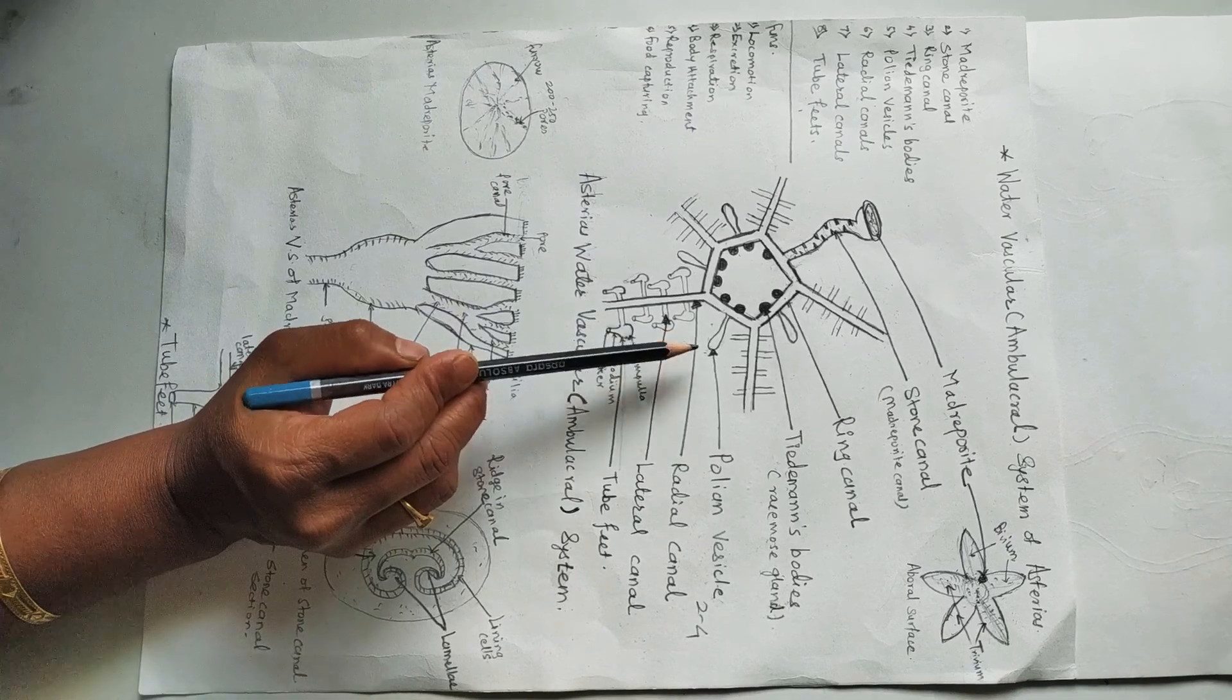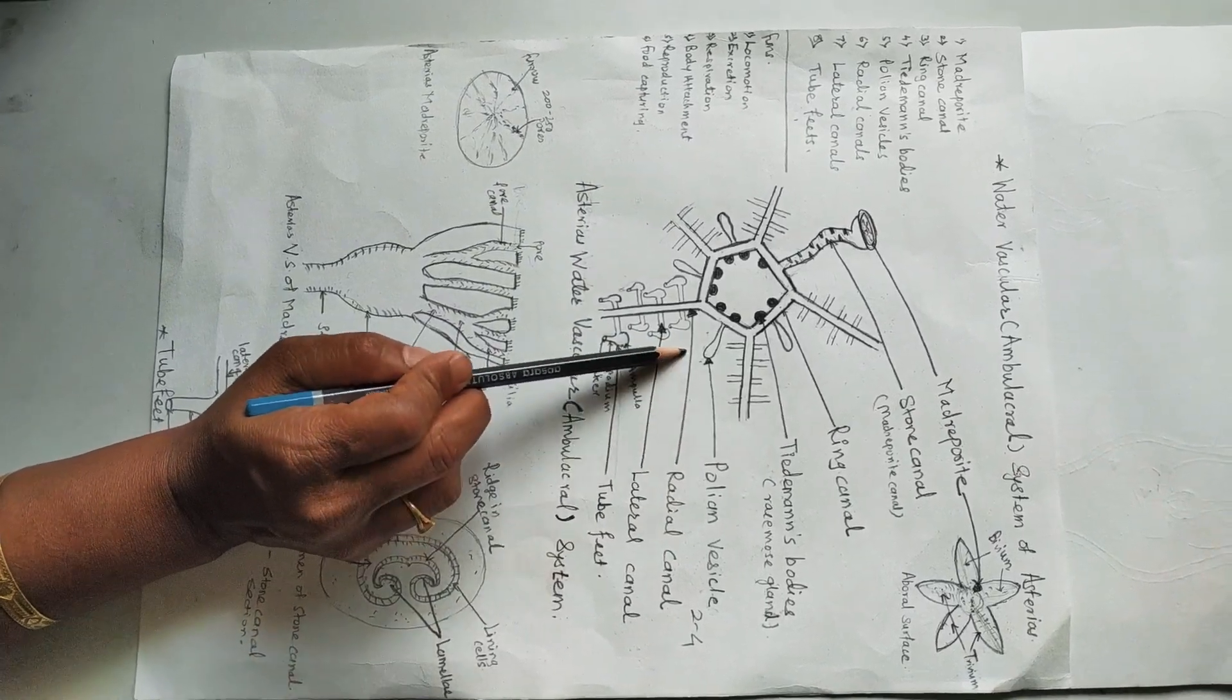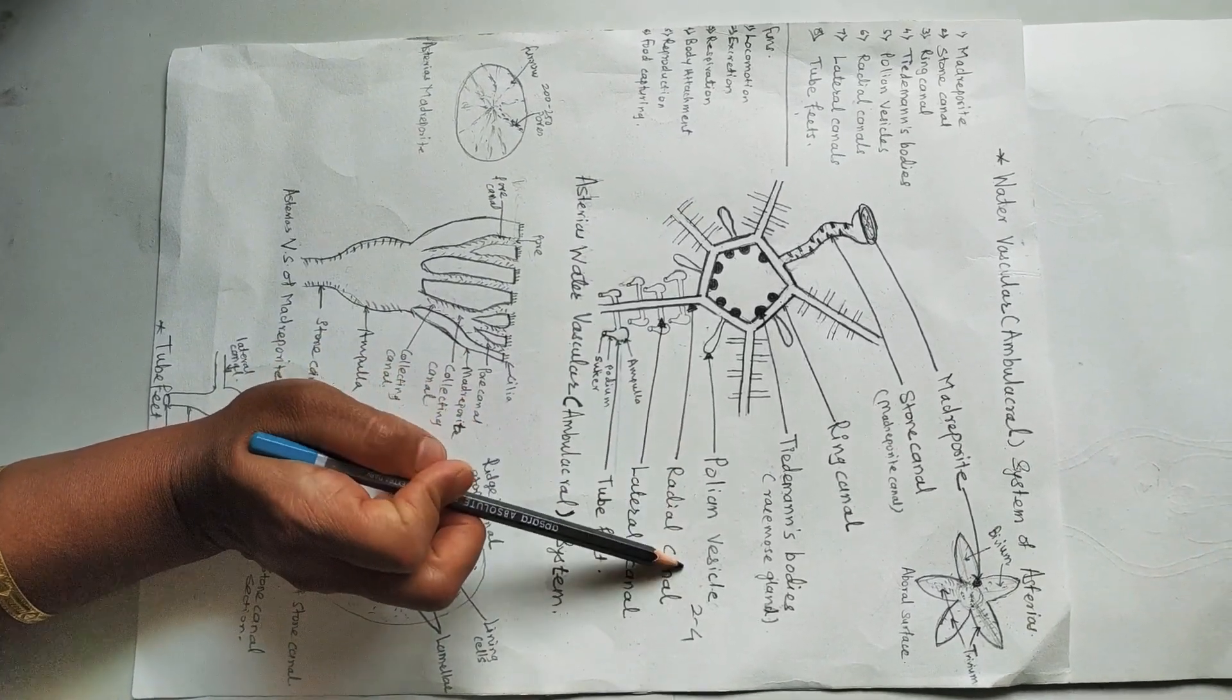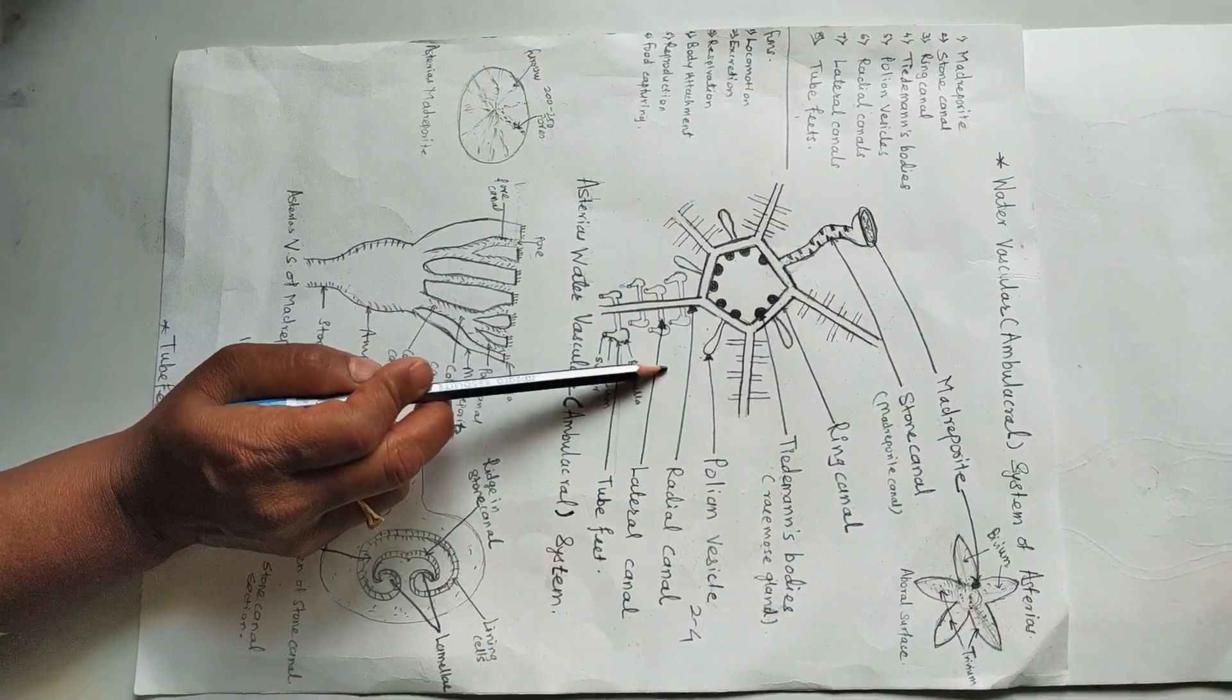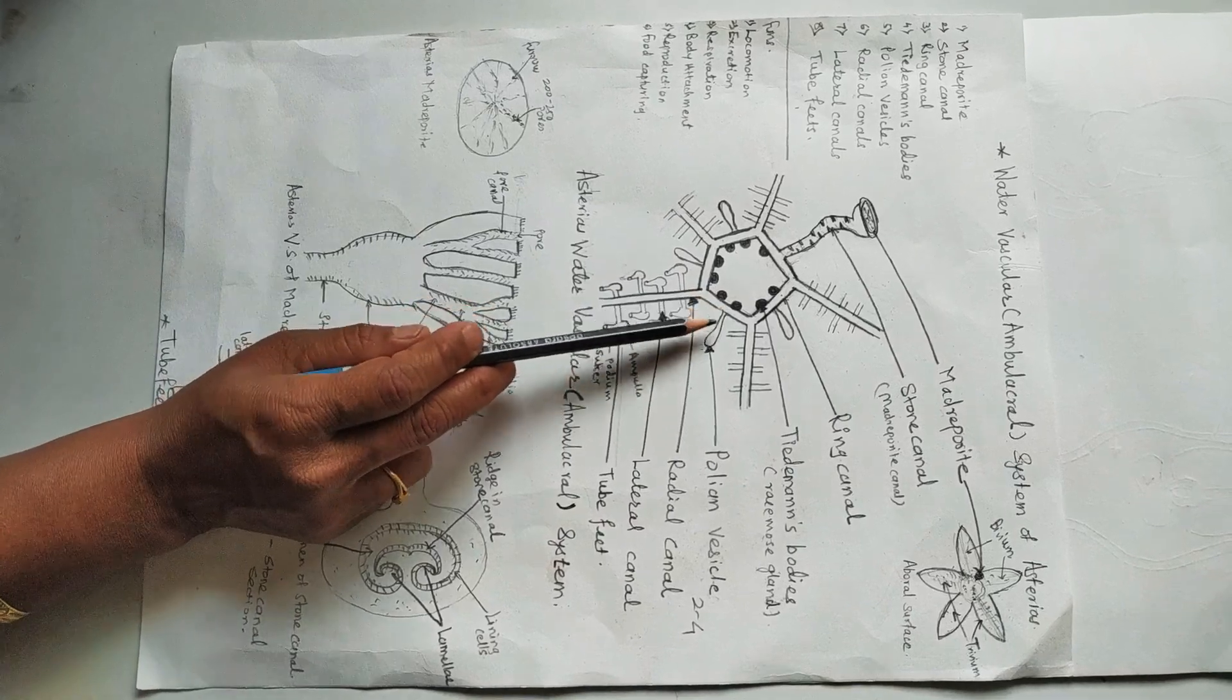Functions of the polian vesicle: they may store the water, as well as they regulate the pressure in the water vascular system, and they manufacture the amoebocyte cells.